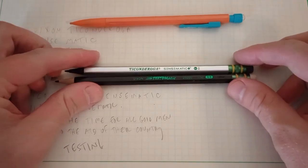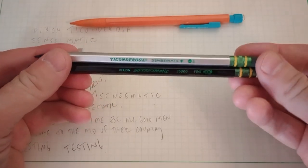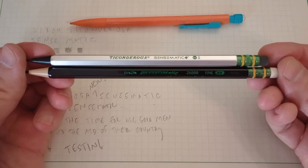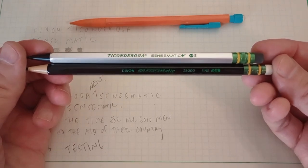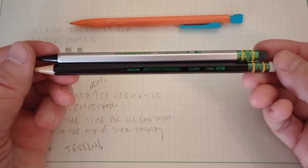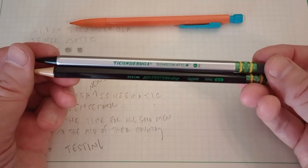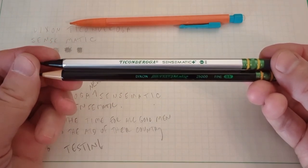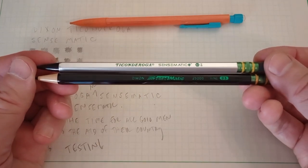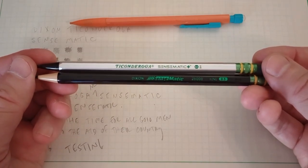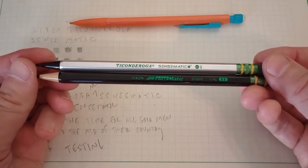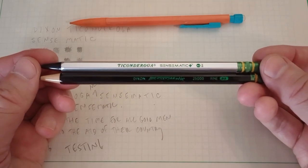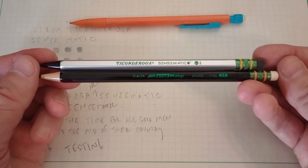So there you go. The Sensomatic from Ticonderoga, or from Dixon, depending on which version you purchase. I do notice that the original black is a little bit longer. I hadn't noticed that before, but it is. Attractive pencils. Clever idea. Somewhat weak in execution. Maybe that's why they never really took off. Regardless, I appreciate you sticking with this and watching. Comment if you have any experience with these, or you have seen a mechanical pencil that you think maybe I ought to be trying. I appreciate you watching, and I hope to see you here again next time.